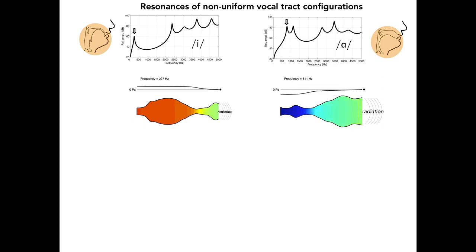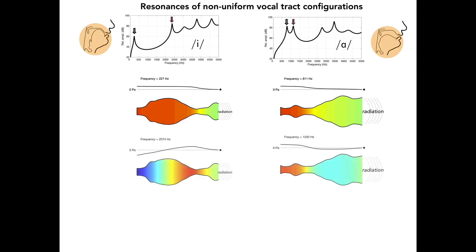The standing waves for the second and third resonances of the E and AH vowels will now be played consecutively. Watch carefully for similarities in locations of zero pressure and differences of pressure amplitudes in other regions of the vocal tract.